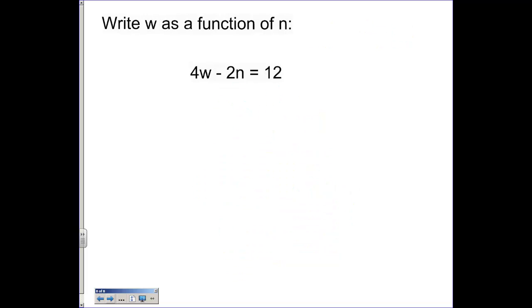We're going to write w as a function of n. So what that means is solve for w. Get rid of anything that doesn't have a w. So 4w is going to equal 12 plus 2n.